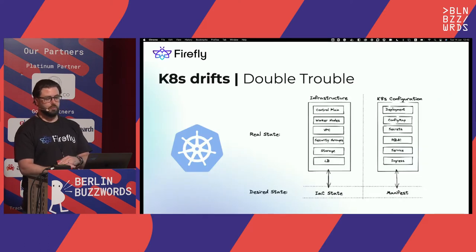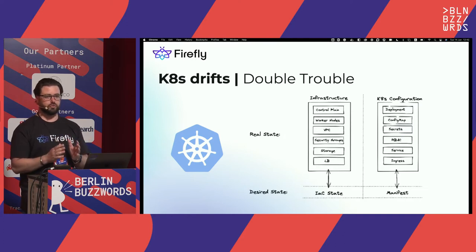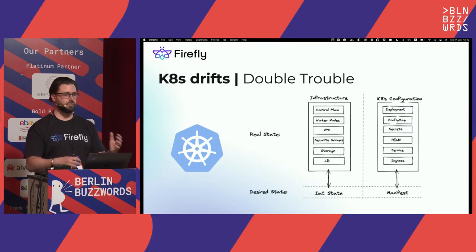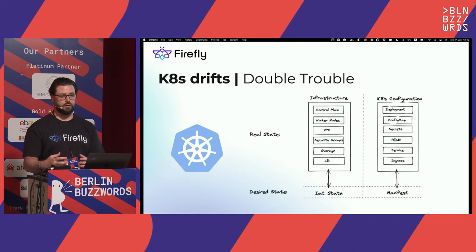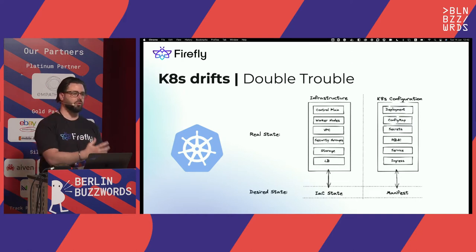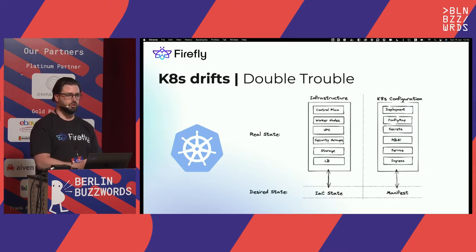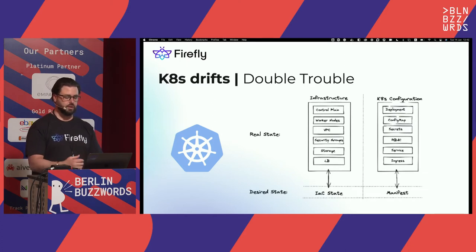Going back to the example of Kubernetes: in Kubernetes there are two dimensions of drift that can happen. There is the infrastructure of the cluster itself — like the control plane, the storage, the security groups, and all the stuff related to the cluster. And then there is the configuration of the workloads inside Kubernetes. So in Kubernetes, you basically need to watch for drifts across both dimensions: the infrastructure and the workloads and manifests inside the cluster.